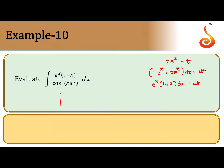Substituting, the integral becomes dt divided by cos squared t, which gives us the integral of secant squared t dt. The integration of secant squared t is tan t plus c.